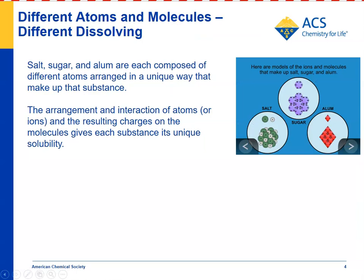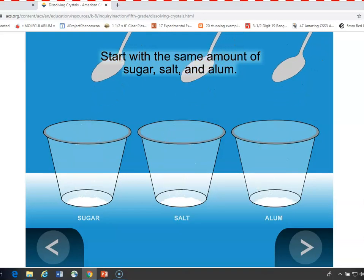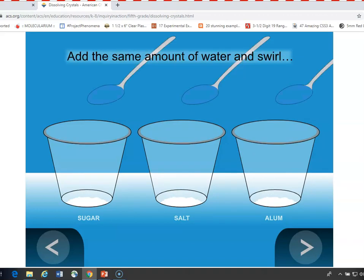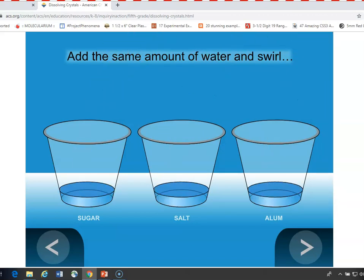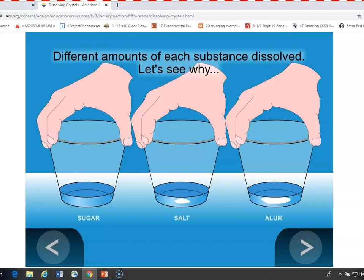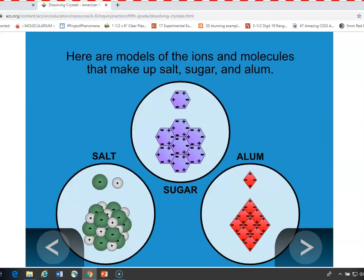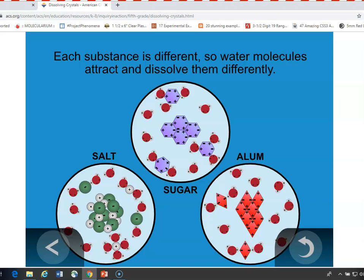The question is: why do different substances have different solubilities? You can explore that with an animation. Adding the same amount of sugar, salt, and alum to three identical cups with the same amount of water and swirling the same way shows no sugar left, a small amount of salt, but a fair amount of alum remaining. Salt, sugar, and alum are all made up of different atoms and molecules, so water interacts with them differently, and they dissolve to different extents.